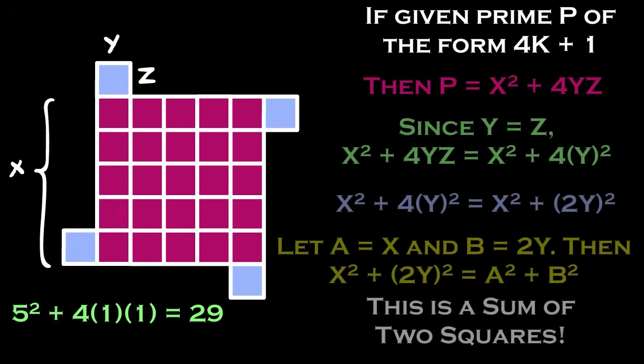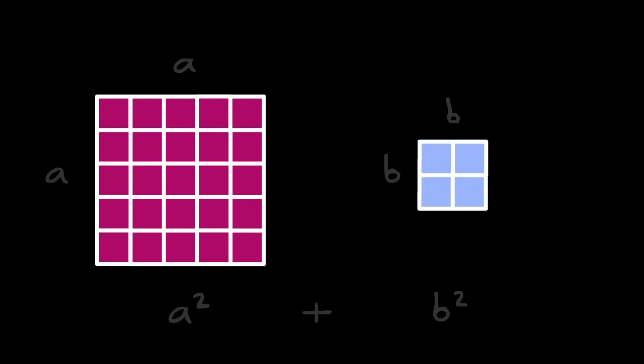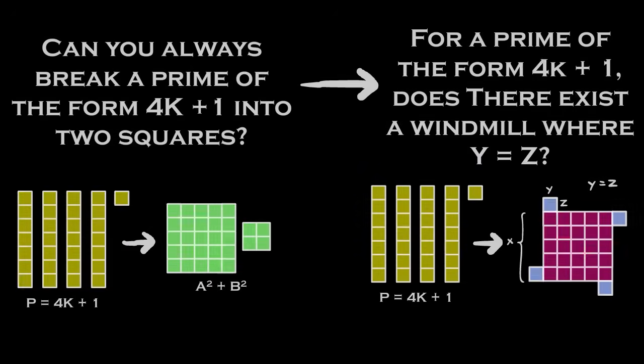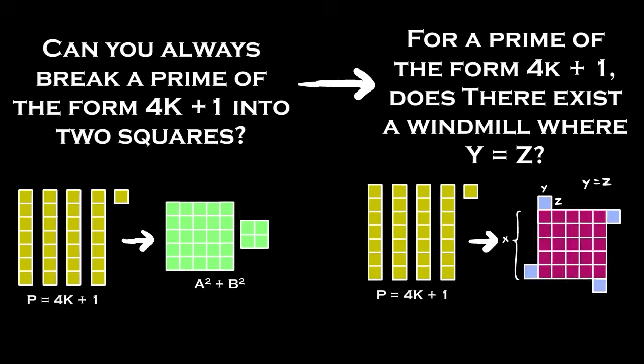Also note that if y equals z, then we get a sum of two squares by working backwards with our derivation. Geometrically, this can be seen by combining the four rectangles into a large square, thus forming two of them. Thus, we've transformed the problem to see if there is some combination of x, y, and z that satisfies the equation such that y equals z.